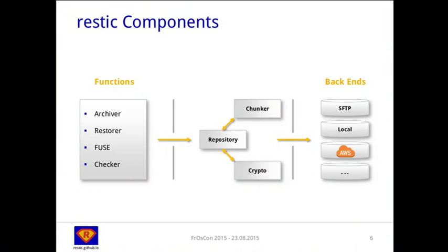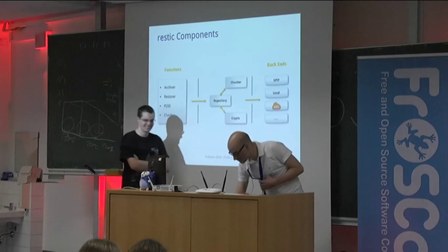Some of the key components: the archiver takes care of the backup, the restorer obviously does restoration, the FUSE mount, and the checker — the integrity check component that verifies if the backup is persistent. They all use the repository, which makes use of the chunker. Alex will explain content-defined chunking. The repository also makes use of cryptography before writing to one of the pluggable backends. The interface for backends is relatively simple, so new backends can be integrated fairly easily.